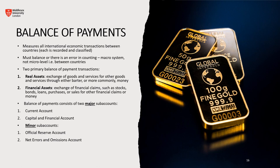The balance of payments consists of two major sub-accounts — the current account and the capital and financial account — and two minor sub-accounts: the official reserve account and the net errors and omissions account. This is very important background knowledge for understanding how we transact with people, involving real assets and financial assets.